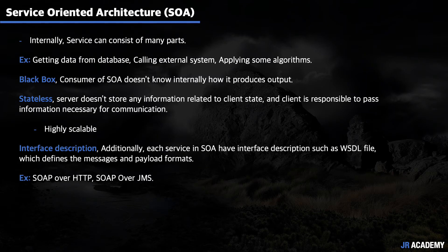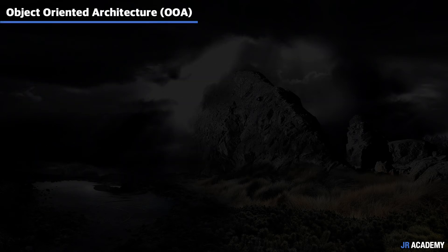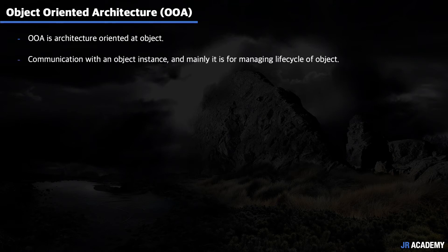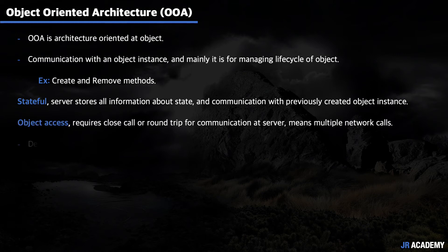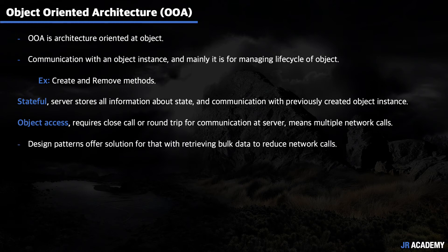Moving ahead, we have object-oriented architecture. As the name suggests, it is architecture oriented around objects. It involves communication with object instances and is mainly for managing the lifecycle of objects — for example, creating and removing objects. Communications here are stateful, meaning the server stores all information about the state, and communication will be talking to a particular object instance that was previously created. Object access requires multiple network calls, which is not efficient, but design patterns offer solutions by retrieving bulk data to reduce network calls.